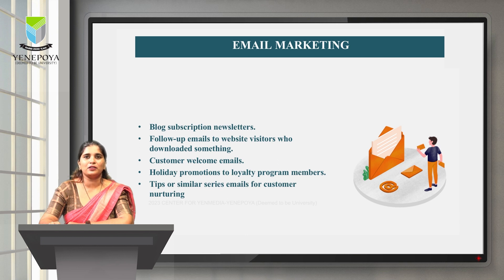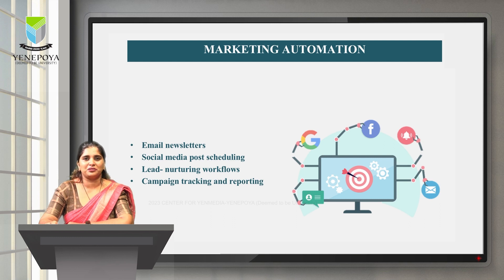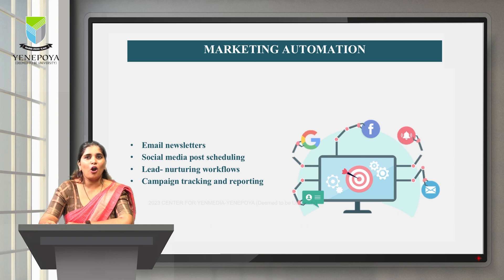The next type is marketing automation, which refers to software that automates your basic marketing operations. Many marketing departments can automate repetitive tasks they would otherwise do manually, such as email newsletters. Email automation doesn't just allow you to automatically send emails to your subscribers — it can also help you grow and shrink your contact list as needed, so your newsletters only go to the people who want to see them in their inboxes.